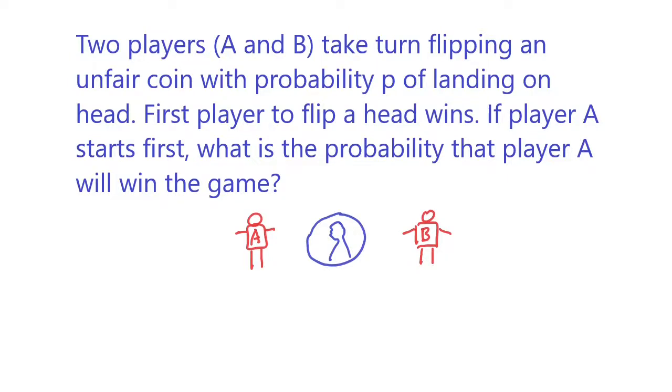Hello folks, today we are going to do another coin problem. Two players, player A and player B, take turns flipping an unfair coin which has probability P of landing on head.